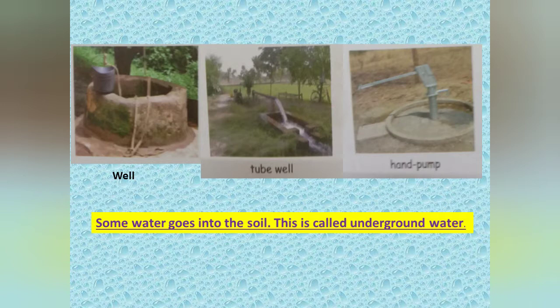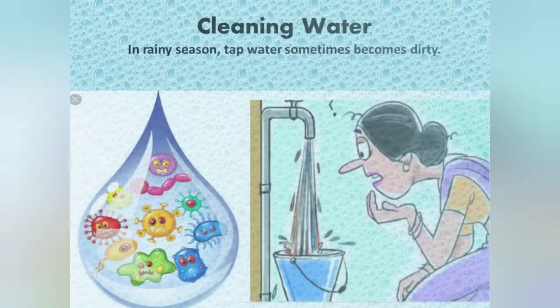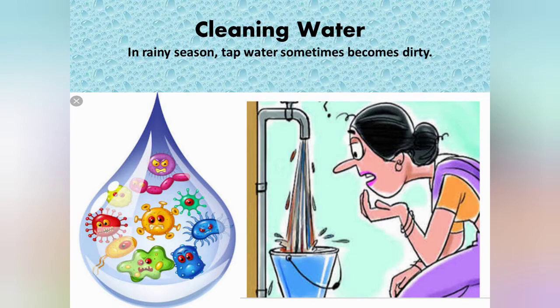Now today we are going to learn about cleaning water and saving water. Water from taps, hand pumps, wells, rivers, lakes and ponds is not safe for drinking. Especially in rainy season, tap water sometimes becomes dirty. It may contain germs and dirt which are harmful for our health. Drinking dirty water makes us sick. So we should always drink clean water. Clean water means it does not have any smell or color and does not contain harmful germs.